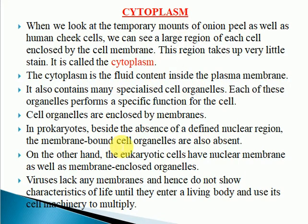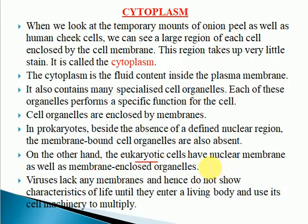In prokaryotes, besides the absence of a defined nuclear region, the membrane-bound cell organelles are also absent. In case of eukaryotic cells, the cell organelles are present and they are membrane-bound, meaning a membrane is present around them. But in case of prokaryotic cells, they don't have the cell organelles and they don't have the membrane. Eukaryotic cells have a well-defined nucleus with a nuclear membrane around it, and the other cell organelles also have membranes around them.